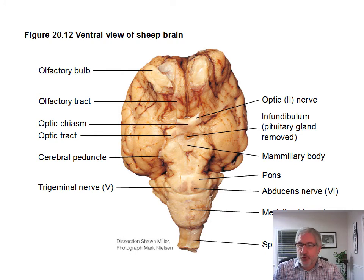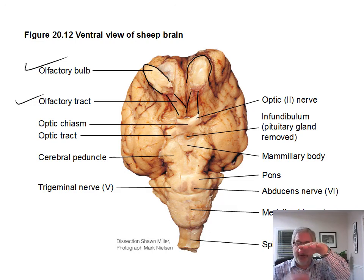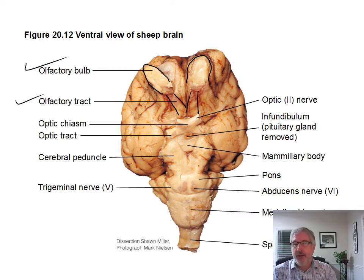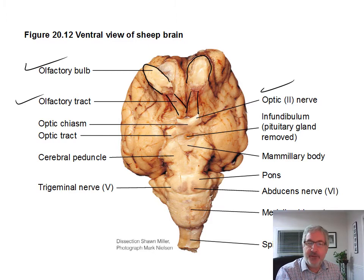Now we're looking at the underside — a ventral view of the sheep brain. You can see the olfactory bulb here and the olfactory tract — the nerve fibers going back. The olfactory bulb sits in the roof of the nasal passage with little fibers sticking down. At the end of those fibers are the sensory receptors for smell. The sensation travels back up those fibers into the olfactory bulb and then via the olfactory tract back into the brain. You also have the optic nerve going out to the eyeballs and the optic tract back here.